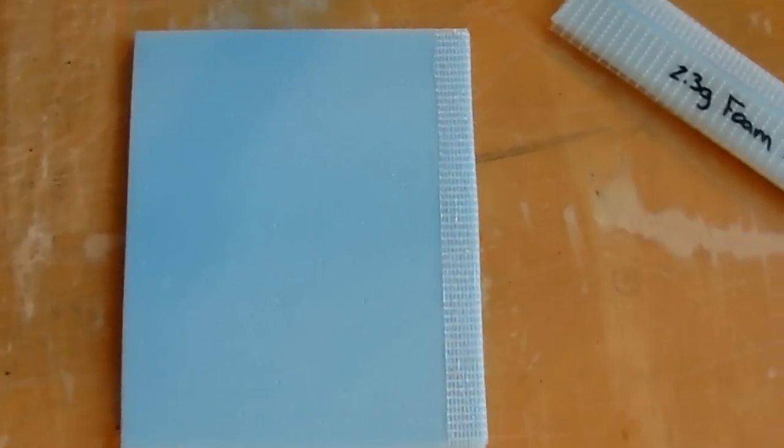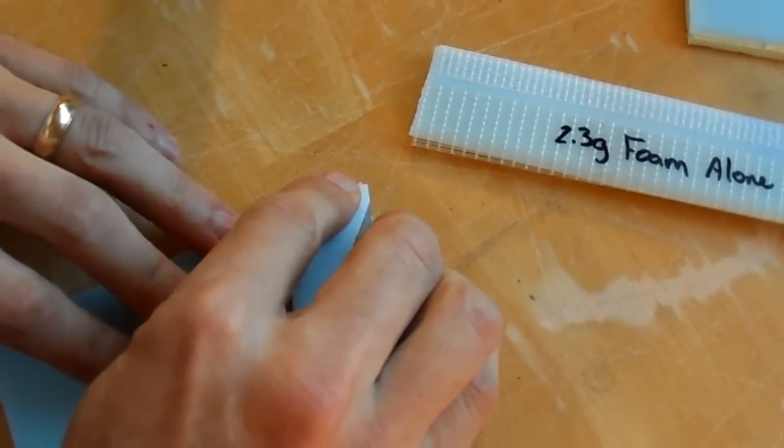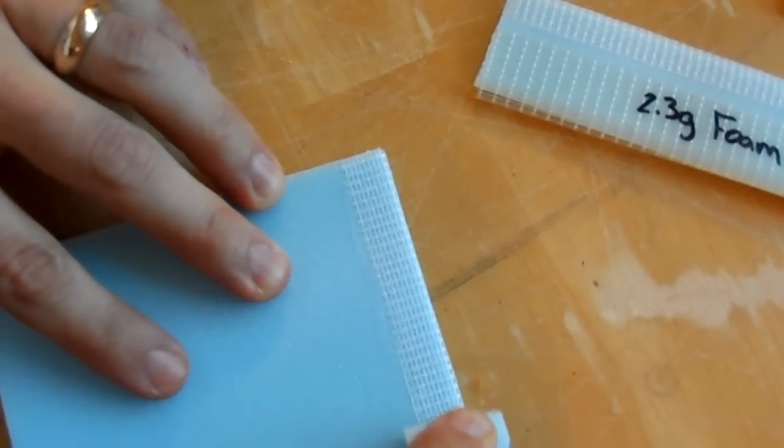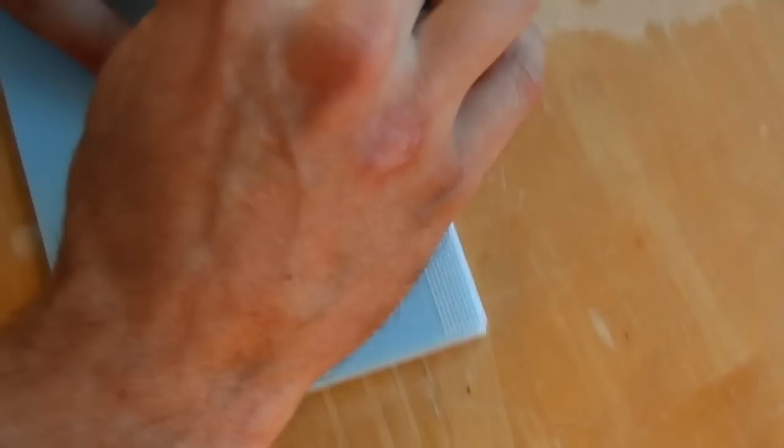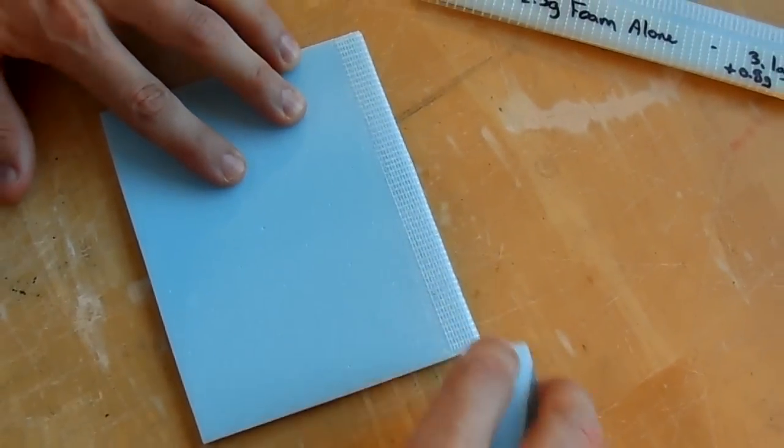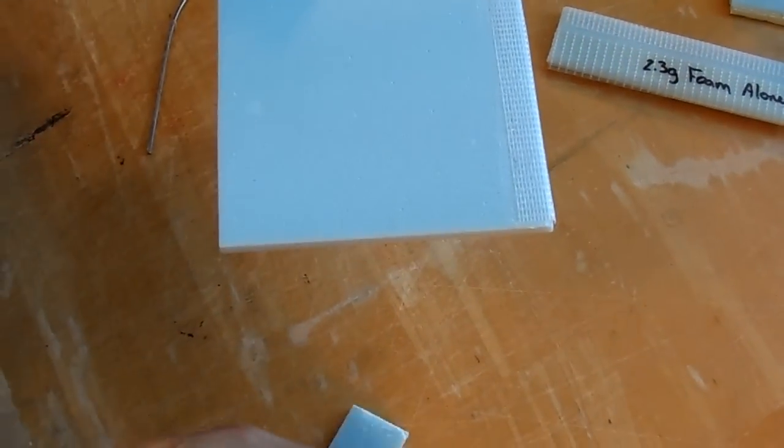Then I take a scrap piece of foam, and just like as if you were doing the hinge for the elevator or another control surface, and just rub it smooth. That's done. Then I do the exact same thing to the other side.